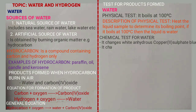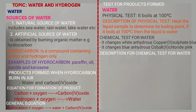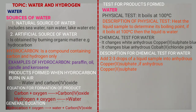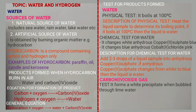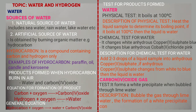The chemical test for water is it changes white anhydrous copper sulfate to blue, or it changes blue anhydrous cobalt chloride to pink. Description for that test: add two to three drops of the liquid sample into anhydrous copper sulfate. If it changes from white to blue, then the liquid is water. Now carbon dioxide is tested using lime water — it changes lime water to a white precipitate. Description: bubble carbon dioxide through lime water; the formation of white precipitate confirms that the gas is carbon dioxide.